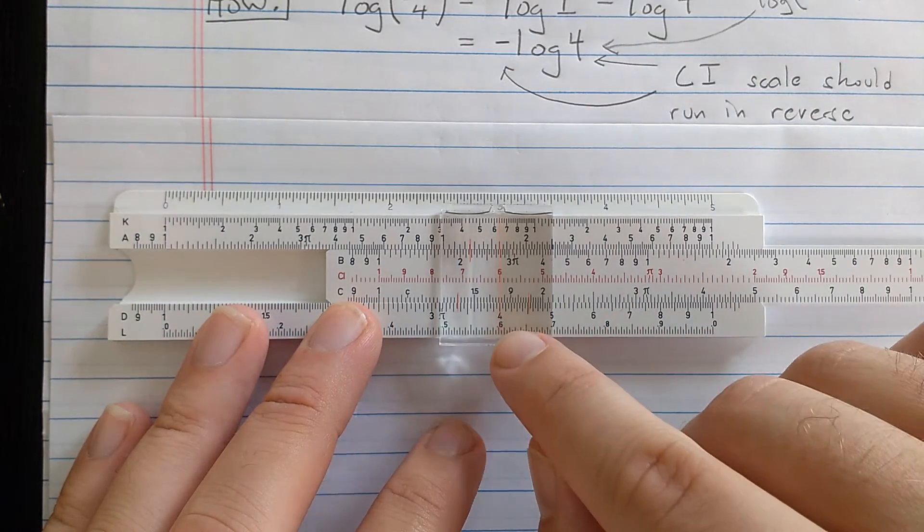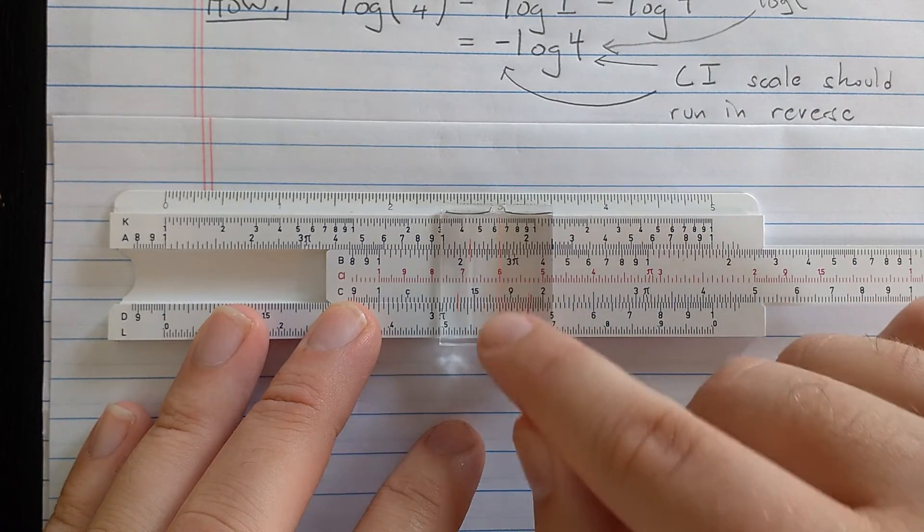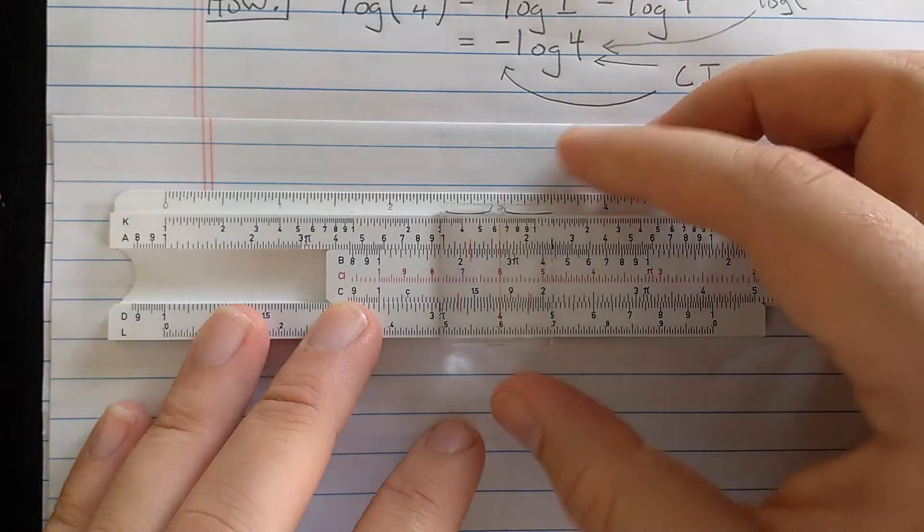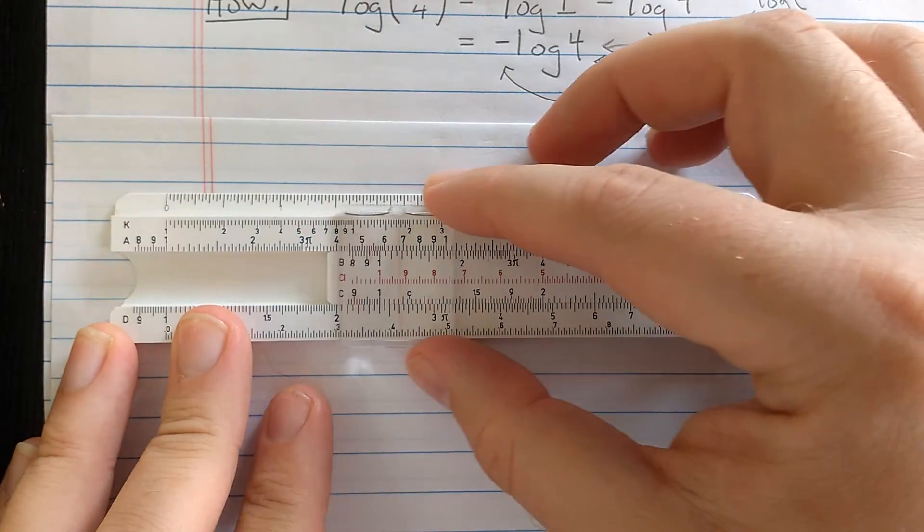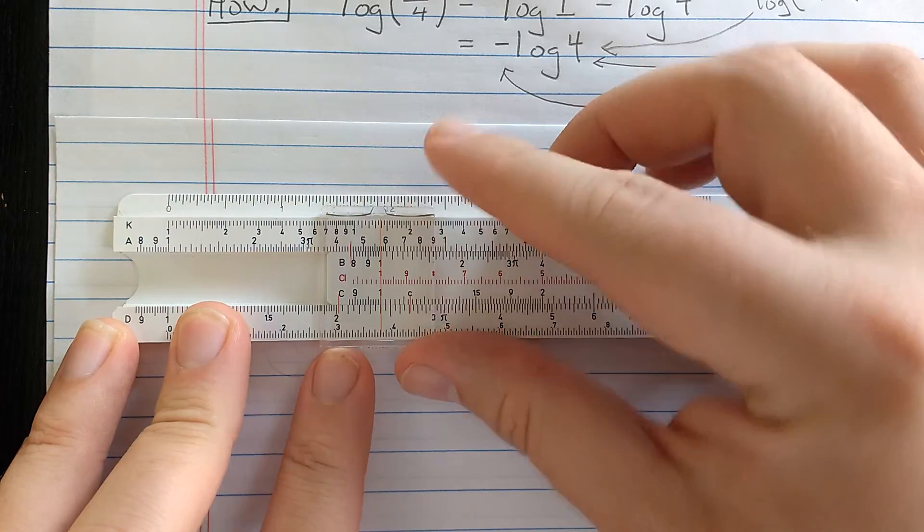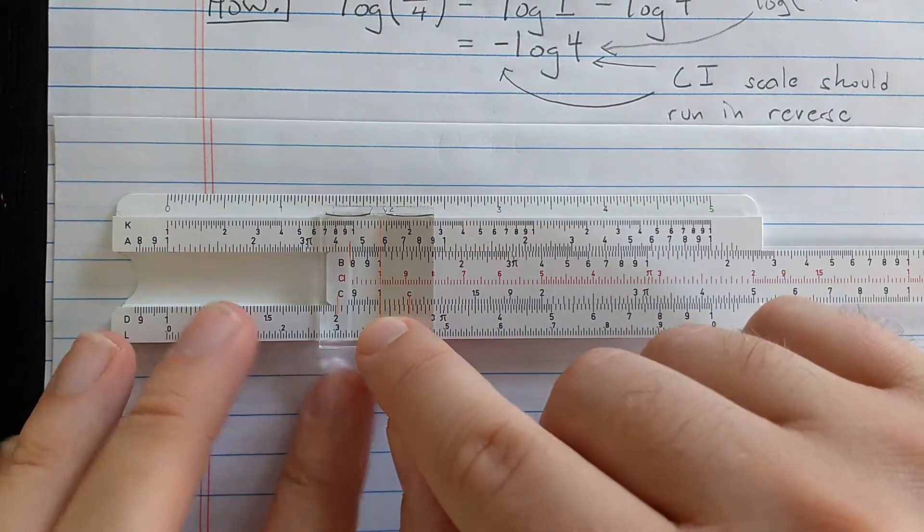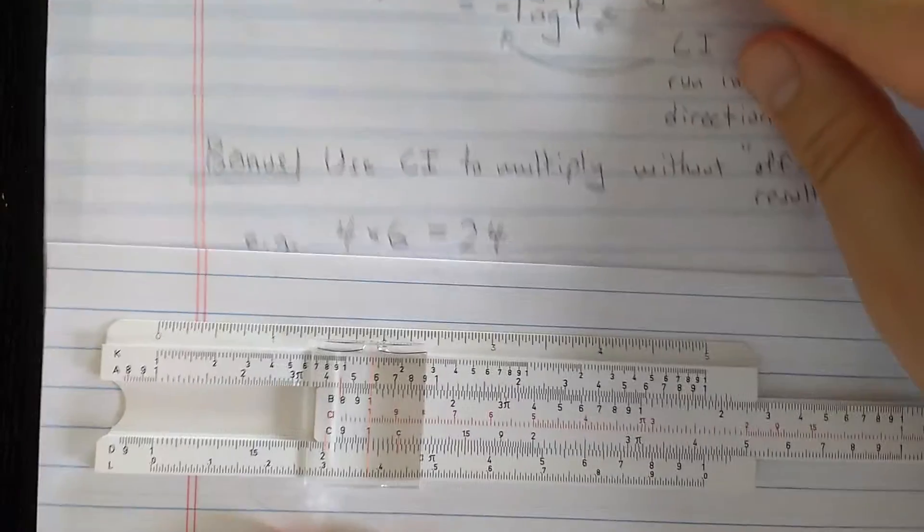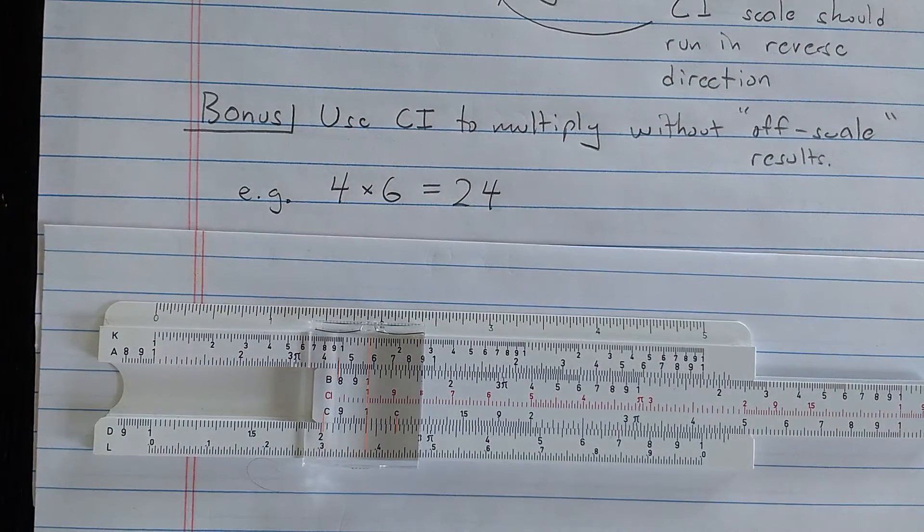But then I'm doing this kind of like division. I align the two numbers, except I use the CI scale. Then on the CI scale, I'm going to find the index and I see the correct result, 2.4,